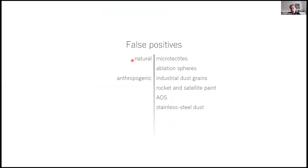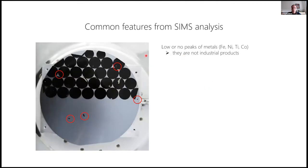First of all, you have to know that there are many false positives in your chemical analysis, so they are usually the natural microtektites and ablation spheres which are residuals after meteor flight in the stratosphere, and they are not micrometeorites. And then there is anthropogenic dust which has usually very many metallic components in the spectra.